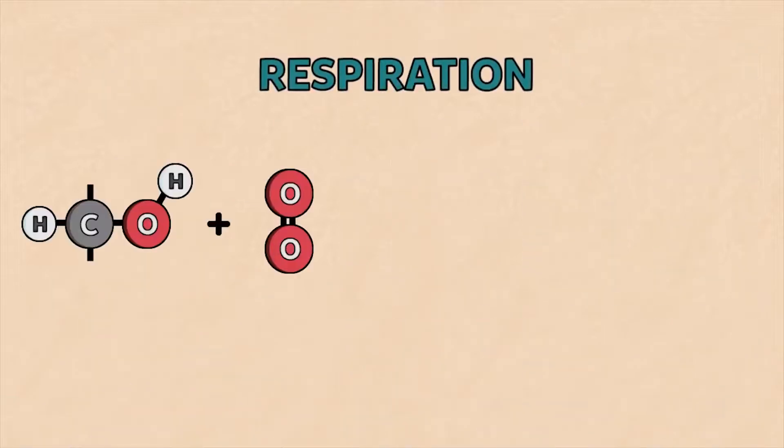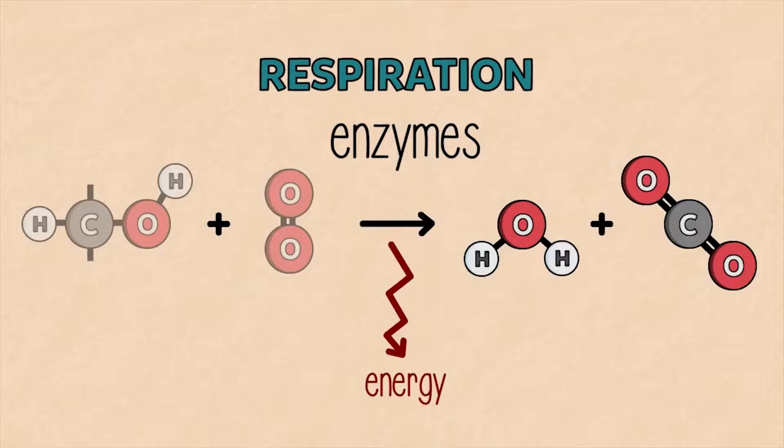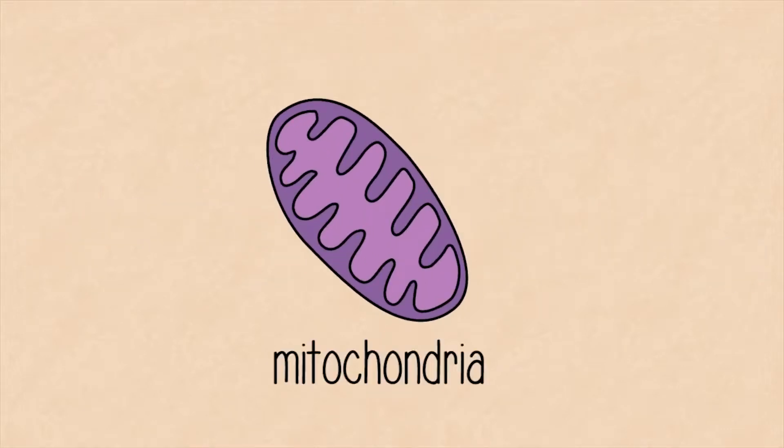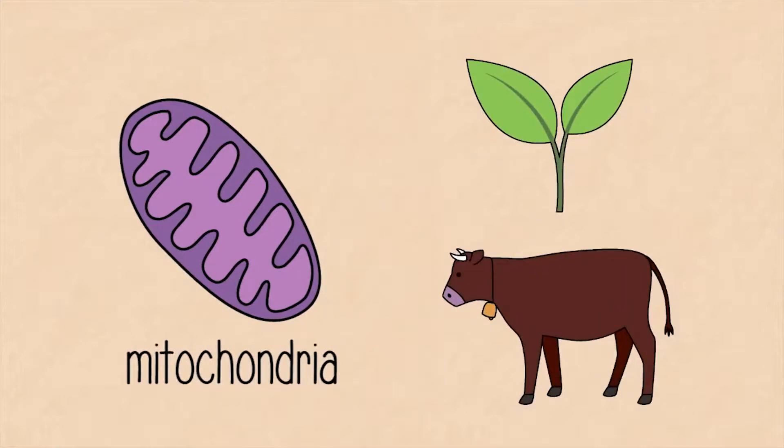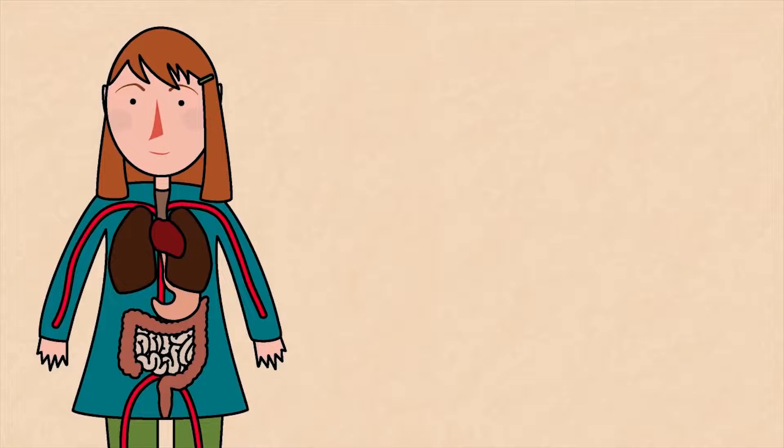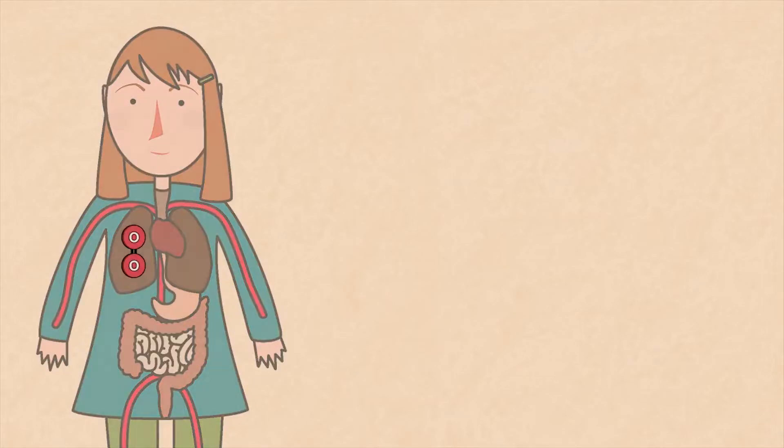Respiration also needs enzymes to enable oxygen to rejoin with the carbohydrate fuel. A series of reactions takes place in the mitochondria in the cells of plants and animals. In humans and most other vertebrates, their blood transports oxygen from the lungs and the digested food from the gut to all the cells in their body.